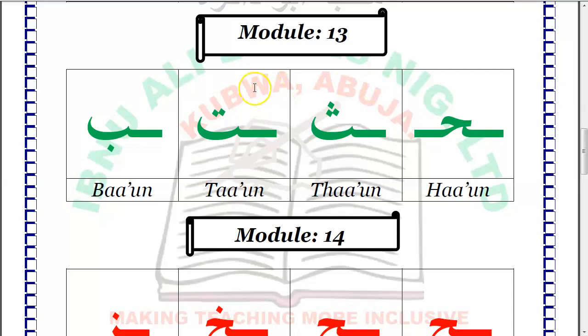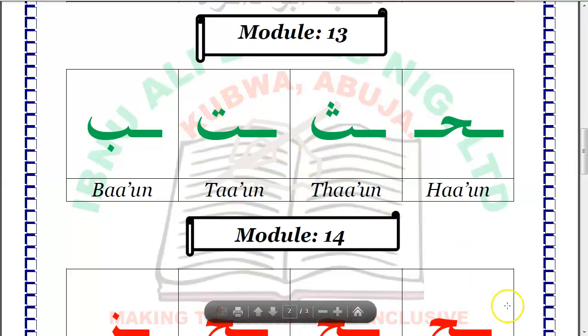Ta-on — you have no problem with that. Ba-on — so you have no problem with Ba-on. La'allaka fahimta — I hope you understand.